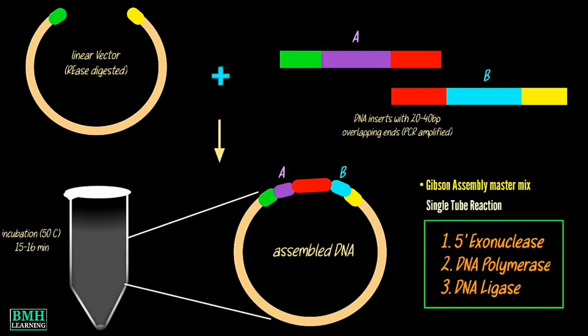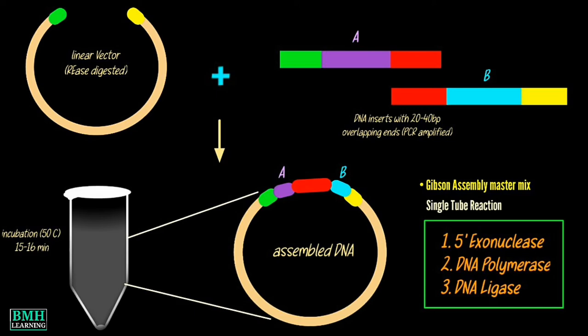General procedure: It requires that the DNA fragments contain around 20-40 base pair overlap with adjacent DNA fragments. These identical sequences can be created via PCR.